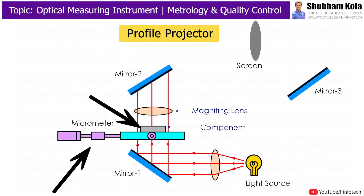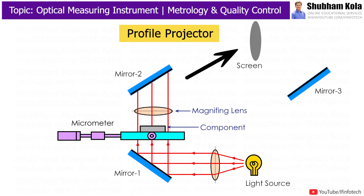Two micrometers are used to measure the travelling of the table in the X-Y direction. The screen is made up of greenish color glass which shows the magnified image. The screen consists of two perpendicular axes used for reference, and one circular scale with markings of angles in degrees.